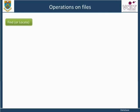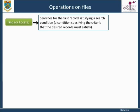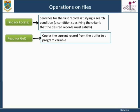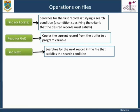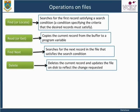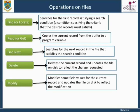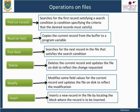The key file operations include: Find, which searches for the first record satisfying a search condition; Read or Get, which copies the current record from the buffer to a program variable; Find Next, which searches for the next record in the file satisfying the search condition; Delete, which deletes the current record and updates the file on disk; Modify, which modifies some field values for the current record and updates the file on disk; and Insert, which inserts a new record in the file by locating the block where the record is to be inserted.